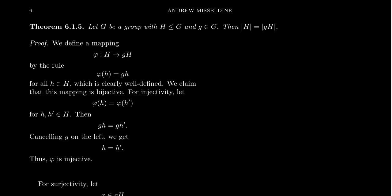We're going to call that map φ, and we're going to define it by the following rule: φ(h) is going to equal g times h. This is a map we've actually run into before — this is the map that we would call left translation, where we multiply on the left by the element g.